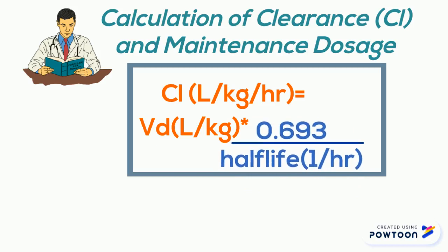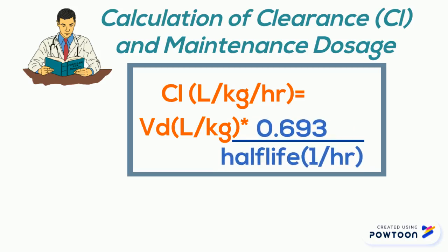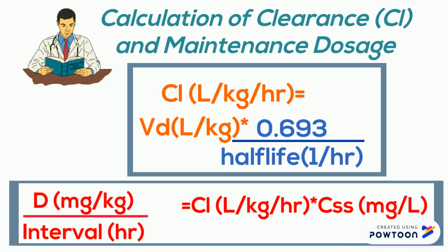The maintenance dose is expressed in milligrams per kilogram body weight given at each interval, and equals the clearance (in liters per kilogram per hour) times the desired steady-state concentration in plasma. If the drug is given by any route other than IV, we must account for bioavailability — F — which is the fraction of drug that is absorbed and ultimately reaches the blood to be distributed throughout the body.